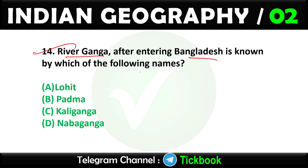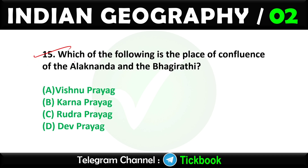Option number A: Oraon is the right answer. Question fourteen: River Ganga, after entering Bangladesh, is known by which of the following names? Option number B is the right answer: Padma. Question fifteen: Which of the following is the place of confluence of Alaknanda and Bhagirathi? Option number D is the right answer: Dev Prayag.